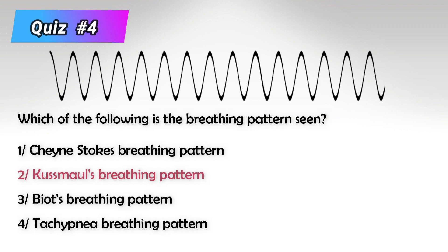The acidity of the blood will be very high, and they will compensate by expelling as much carbon dioxide as possible. Because carbon dioxide is itself acidic, by expelling it they will decrease the acidity of the blood. And they will accomplish this by rapid, high-amplitude, and very long breathing.